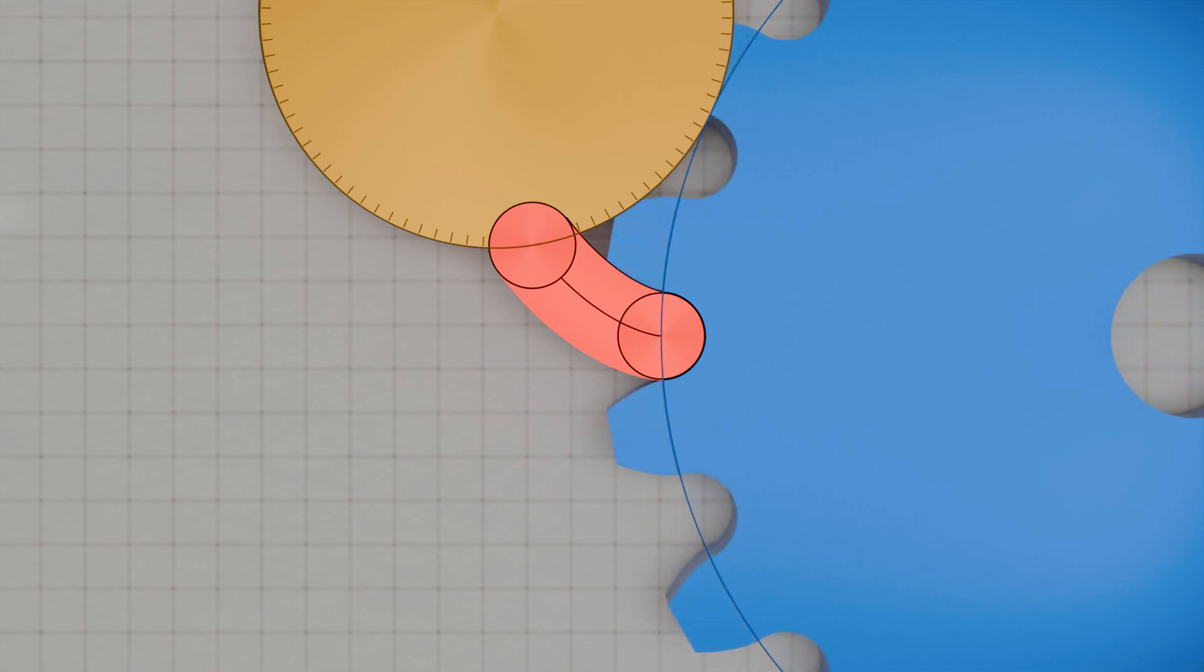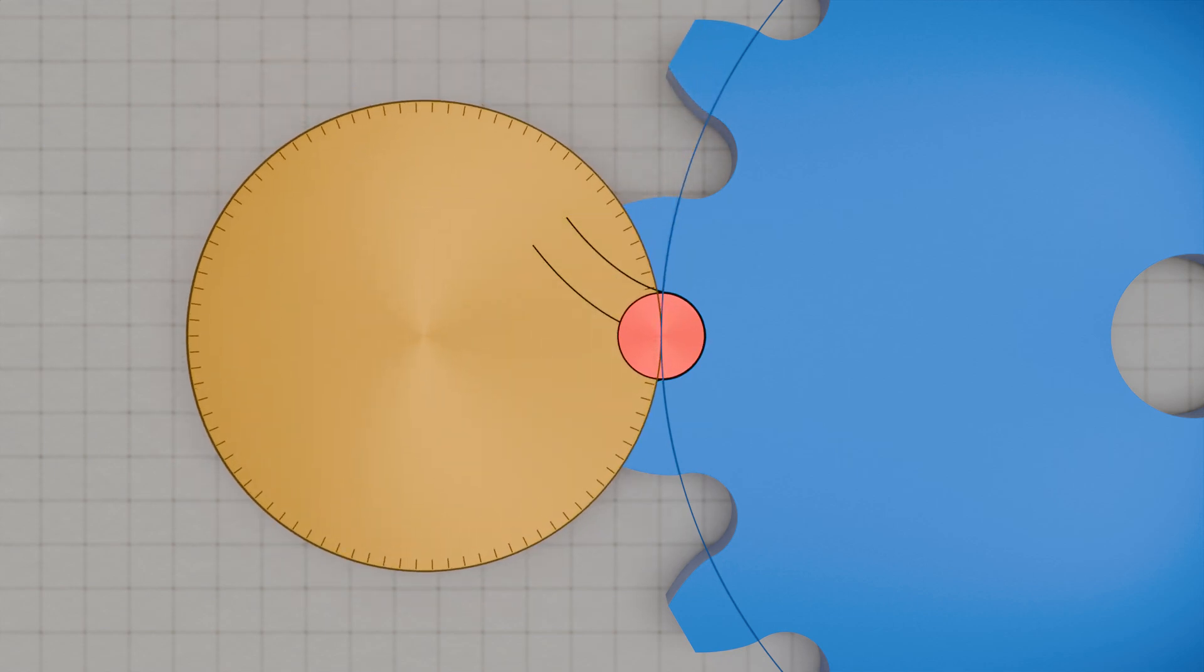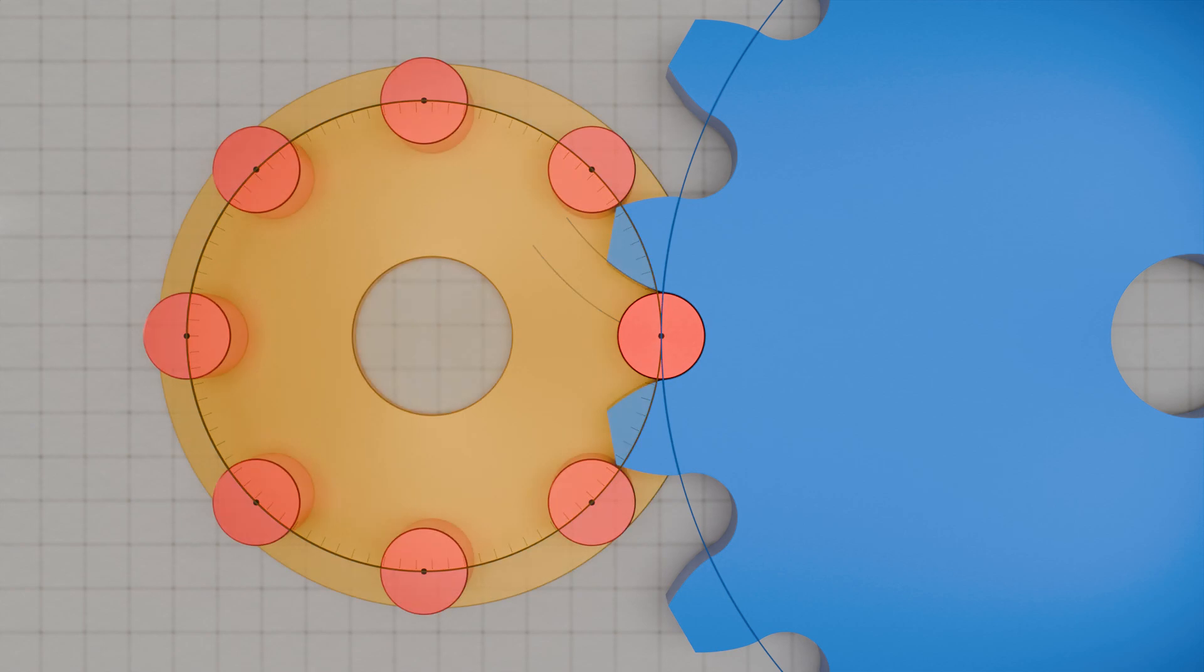Thus, the tooth shape results from an equidistance to the cycloid. To construct the lantern pinion, the trundles are arranged in a circle with their centers on the rolling circle.